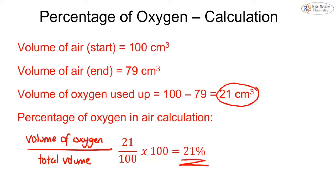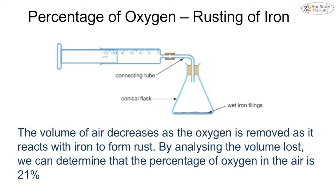We can also do the same experiment using the rusting of iron. Wet iron filings are used to encourage rusting, along with oxygen. This experiment needs to be left for about a week. Again, the plunger in the gas syringe will move, and from the starting and end volumes you can calculate that approximately 21% of the air was oxygen, as the oxygen is removed when it forms iron oxide — another name for which is rust.